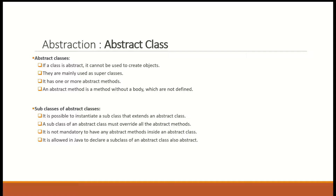If you have an abstract class, it can have one or more abstract methods. The subclass of the abstract class will implement those abstract methods. If the subclass implements all abstract methods, then that subclass is a complete concrete class, so it is possible to instantiate the subclass. You can create an object of the subclass because you already implemented the abstract methods of the parent class.